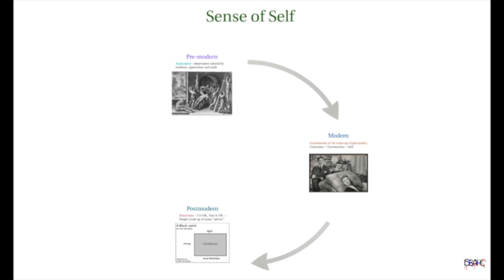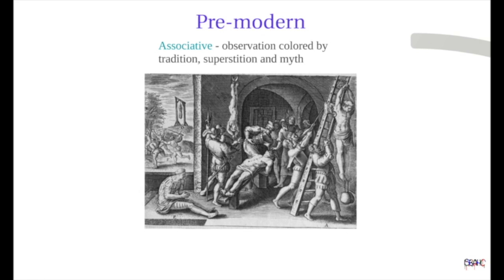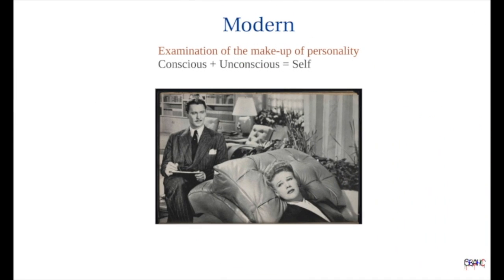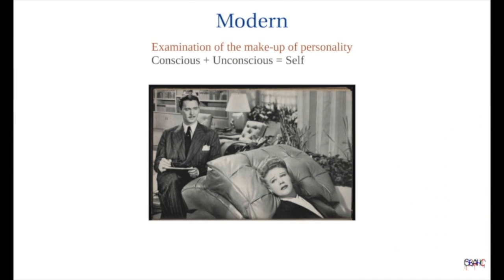The pre-modern self was defined by ethnic, cultural, and class associations — your clan or tribe. In the modern age, the individual became more important, and the personality became a subject worthy of study. Like anything in nature, the self was made up of layers that could not be seen.